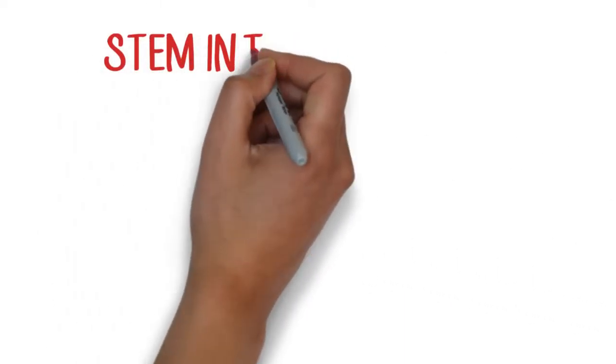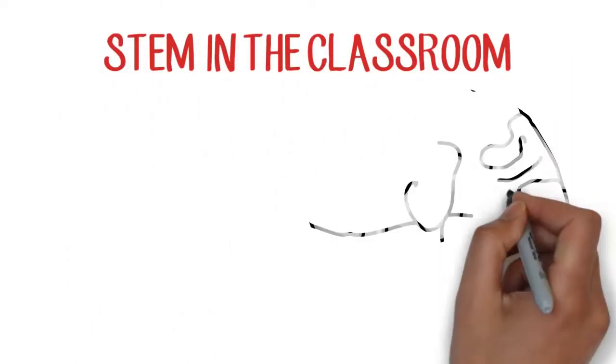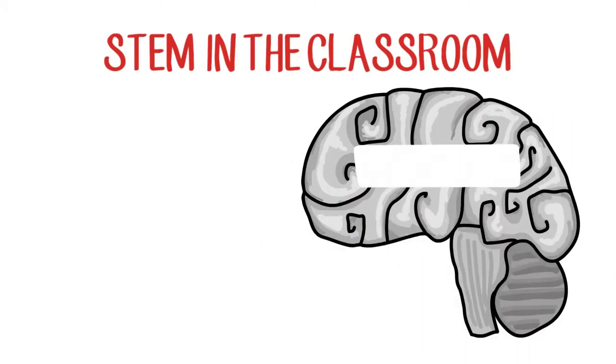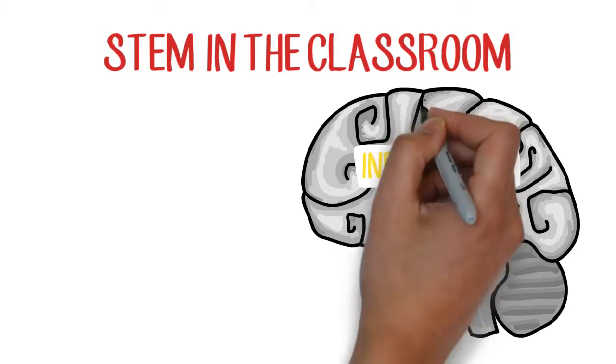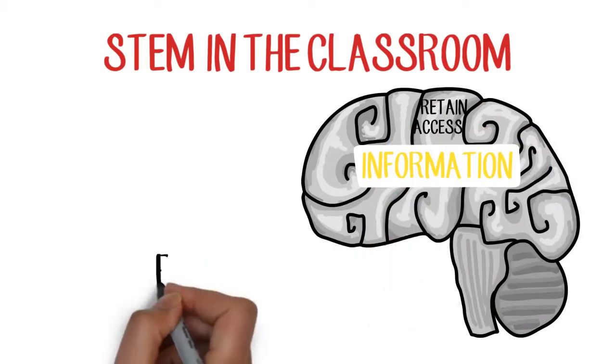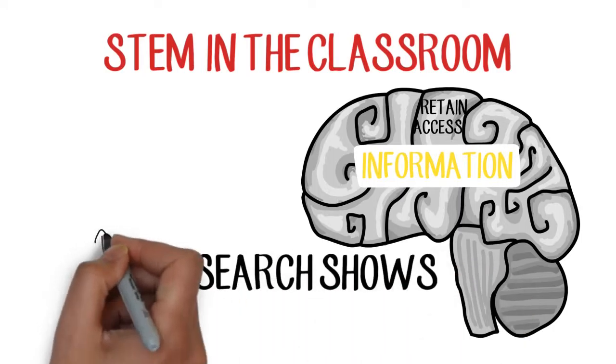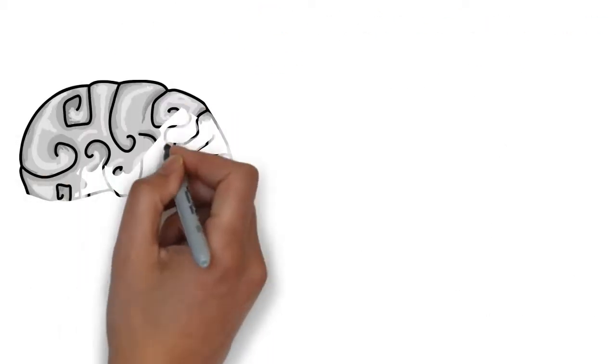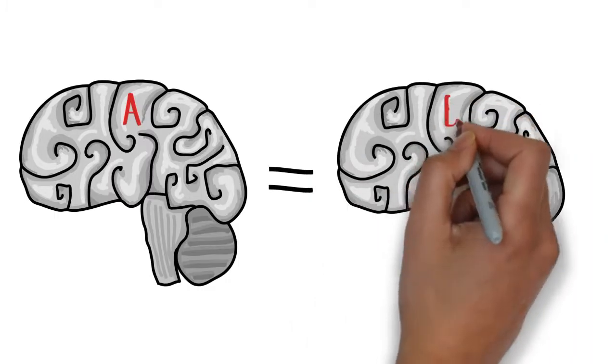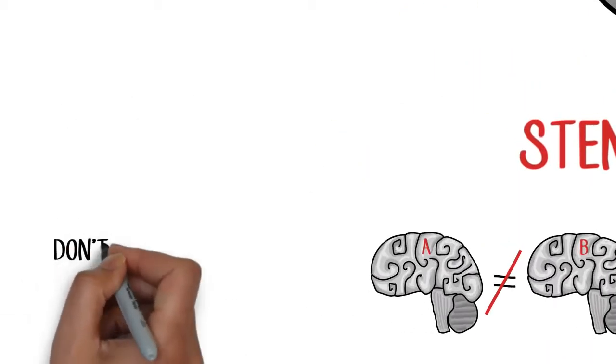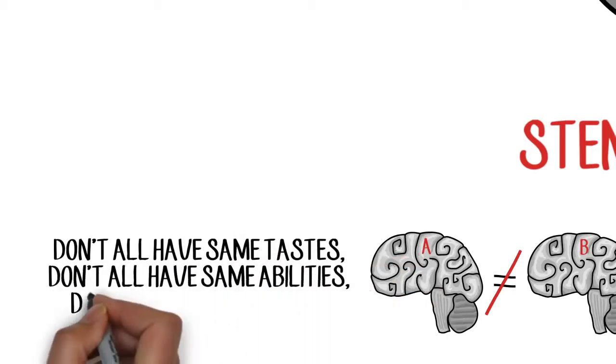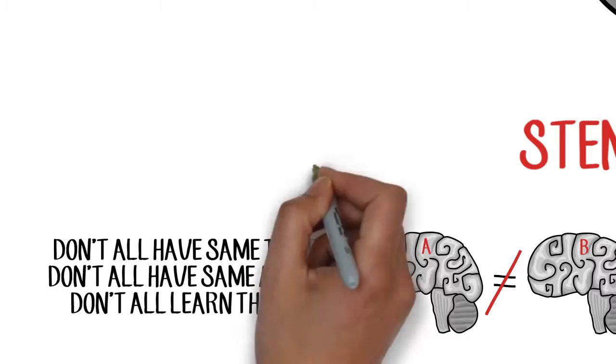As we bring STEM into the classroom, it's important for us to look at the science of learning, understanding how the brain actually learns. How does the brain take in information, retain information, access information? If you look across the research of learning, you'll notice a couple of things very quickly. The first is that different brains learn differently. We don't all learn in the same way. Just like we don't all have the same tastes or abilities in sports, we also don't all learn in the same way.